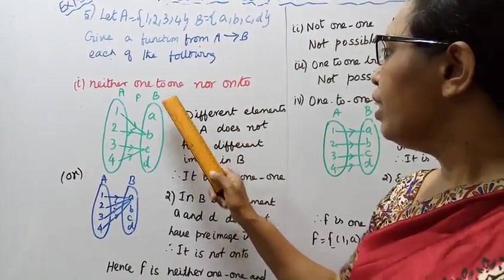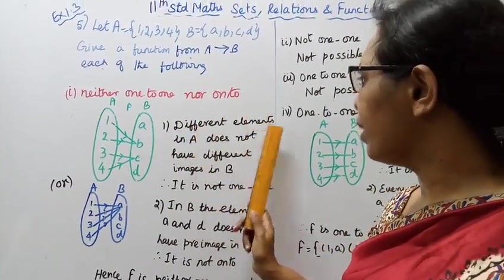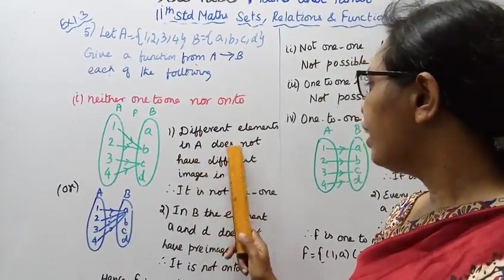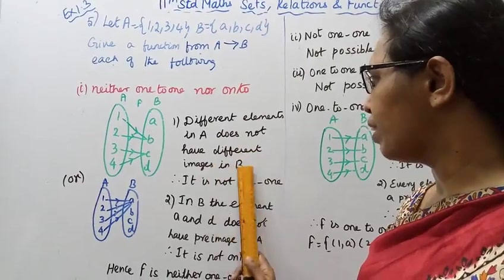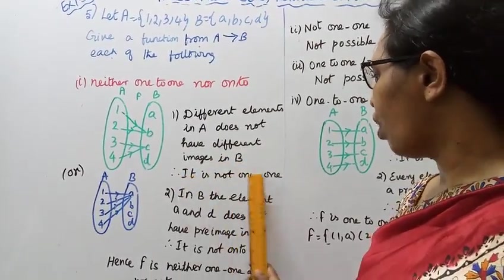Neither 1-to-1: different elements in A does not have different images in B. Therefore it is not 1-to-1.